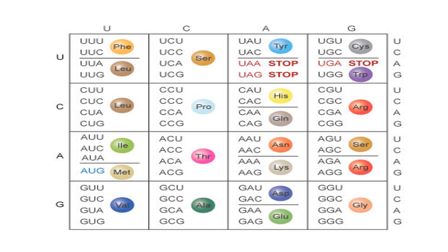If the mRNA sequence has UAA, the corresponding DNA sequence would be ATT. If the ribosome encounters ATT on the template, that will produce UAA and be a translation stop. Similarly, AGC becomes UAG — also a stop codon. And ACT becomes UGA — also a stop codon.